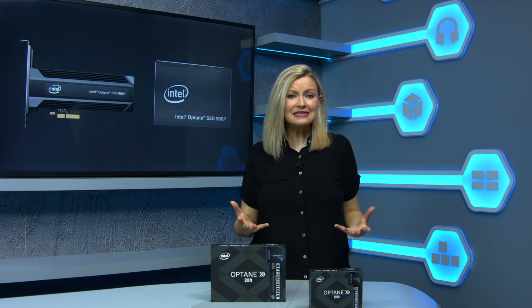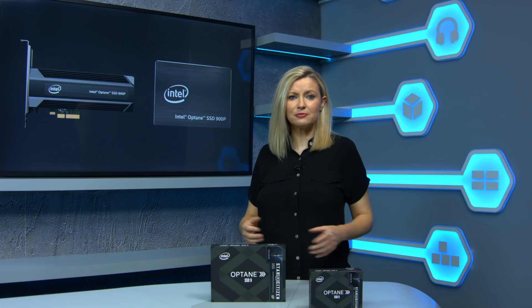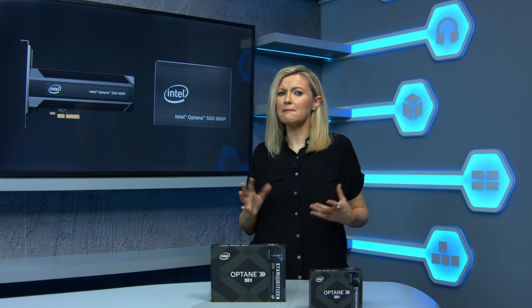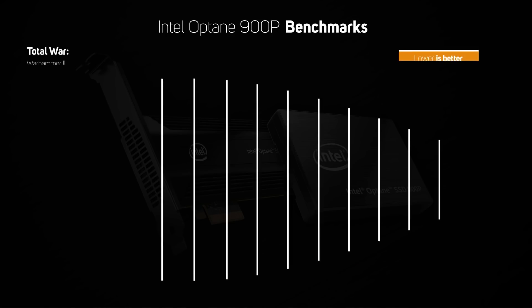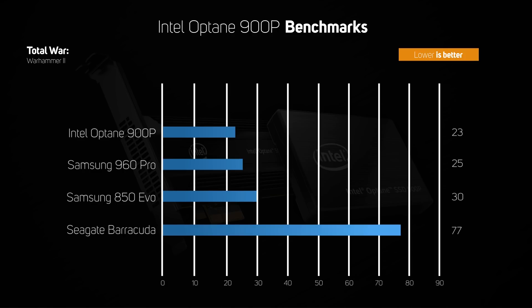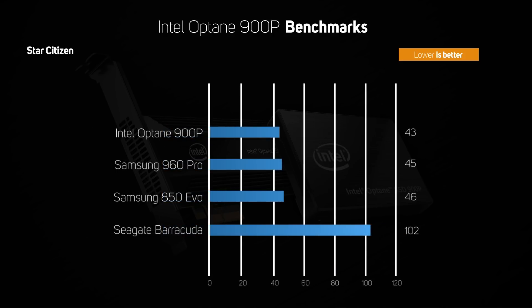As the 900p turned in a mixed set of results in the synthetic CrystalDiskMark benchmark — with some great and some middling results — we also wanted to see if it could accelerate loading games. The two games we tested were chosen because they have huge data sets and so were a big challenge for any storage device, as shown by the time it took the hard disk to load both games. What we discovered is that pretty much all SSDs take the same amount of time to load games. Sure, the more expensive 900p and 960 Pro were a bit faster than the 850 EVO, but less than a handful of seconds isn't enough of a difference to get too excited about.